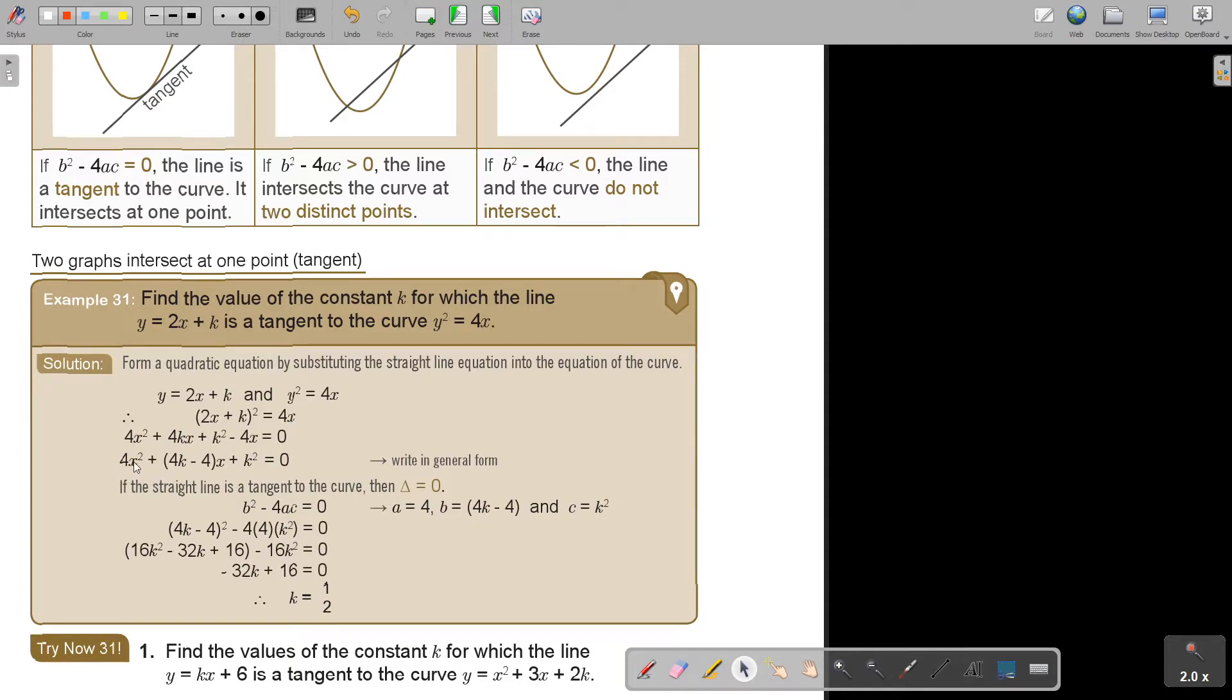Now I write it in general form. That means all the X squared, then the X, then the without X. Now, because I'm telling you it's a tangent, the discriminant is equal to zero. I substitute that. Don't forget, this is A, this is B, and this is C. I substitute it in, and then I work it out, and then I get my unknown. That's a way where I'm telling you what is the discriminant to find an unknown value.